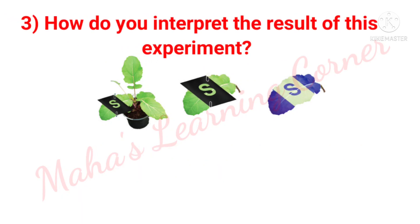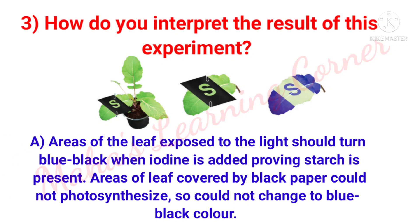How do you interpret the result of this experiment? Answer: Areas of the leaf exposed to the light should turn blue-black when iodine is added, proving starch is present. Areas of the leaf covered by black paper could not photosynthesize, so could not change to blue-black color.